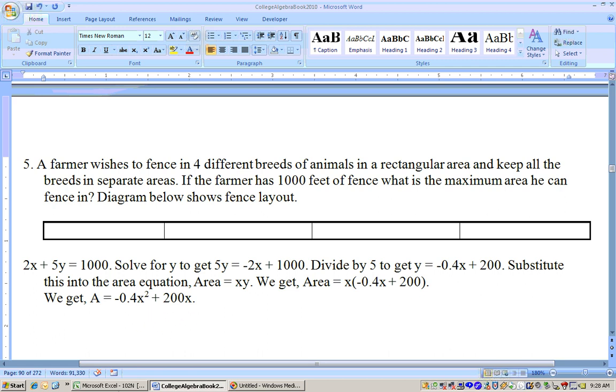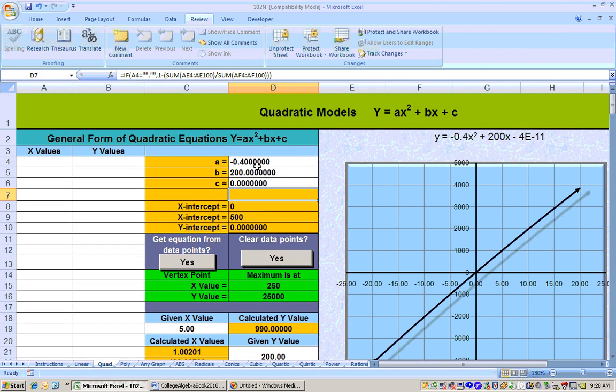Well, that's a quadratic, so just go to your quadratic sheet and put in your coefficients: negative 0.4 and 200. Your C is 0, and your maximum area is a Y value of 25,000 square feet. So that is your maximum area right here.